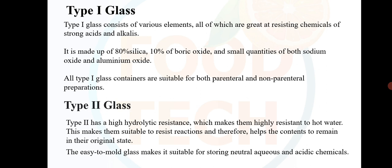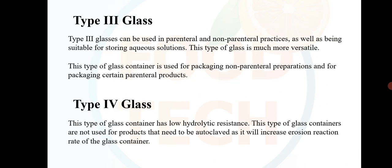All Type 1 glass containers are suitable for both parenteral and non-parenteral preparations. Type 2 glass has high hydrolytic resistance, making it highly resistant to hot water. This makes them suitable to resist reactions and helps the contents remain in their original state. The easy-to-mold glass makes it suitable for storing neutral aqueous and acidic chemicals.